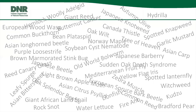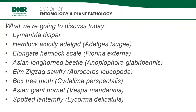Each of these pests has a significant impact on our resources. Today we're going to give a brief overview of eight invasive insects — three of which have been found in Indiana and are currently being managed by Indiana DNR. The eight insects of special concern include Lomantria dispar (formerly known as gypsy moth), hemlock woolly adelgid, elongate hemlock scale, Asian longhorn beetle, elm zigzag sawfly, box tree moth, Asian giant hornet, and spotted lanternfly.